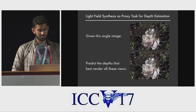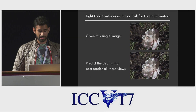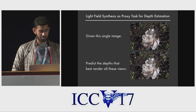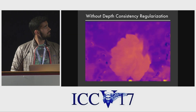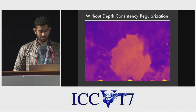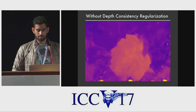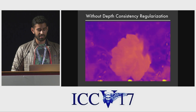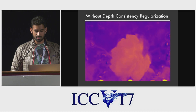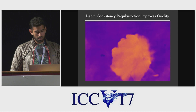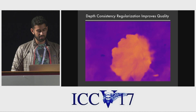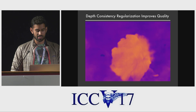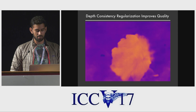We can also consider local light field synthesis as a proxy task for training a network to predict scene depths from a single image without requiring any ground truth depth supervision. If we only train the network to minimize the view reconstruction error, the model can predict depths that are incorrect and inconsistent across views as long as they render the correct pixels. So we introduce a novel regularization that encourages the network to predict ray depths that are consistent when they intersect the same scene point, which can be thought of as a 4D generalization of the left-right consistency used in previous methods.